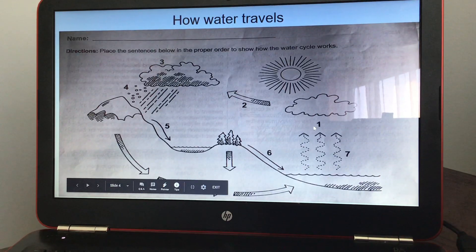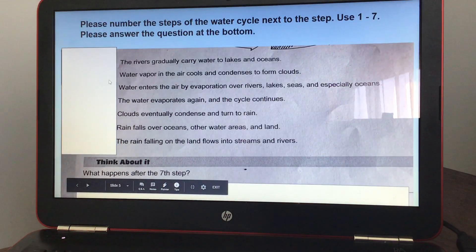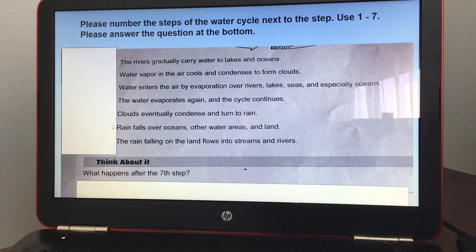Okay, you're going to look at this diagram of the water cycle and how it travels. And then you're going to answer these questions here. You're going to put these in order. Okay, so number one should be water enters the air by evaporation over rivers, lakes, seas, and especially oceans. So you should put a one right here.